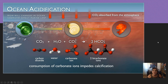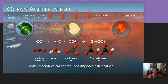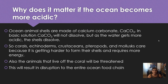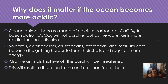Ocean acidification affects shelled animals — little animals with shells. They dissolve when we get more acidic. The CO2 with the water causes carbonate ions to come out of the shells and make bicarbonate. So when we have more acidic waters, it makes it harder for these shelled animals to keep their shells intact. Corals, echinoderms, crustaceans, pteropods, and mollusks all care because it gets harder for them to live and form their shells — it takes more energy. All the animals that live off the coral reefs will be threatened as well, disrupting the whole ocean food chain all the way up to humans.